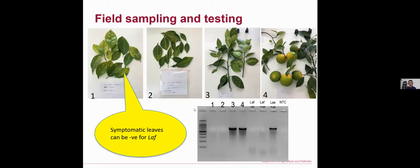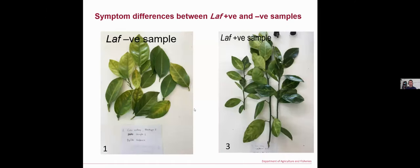So how can we distinguish symptoms between a negative sample and a positive sample? Both showed yellowing symptoms, but for the negative sample the yellowing was more symmetric, which contrasts with the positive sample where the symptom is more asymmetric — a blotchy pattern of green and yellow.